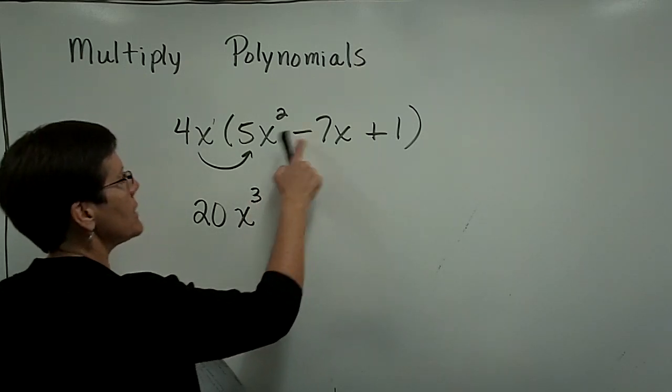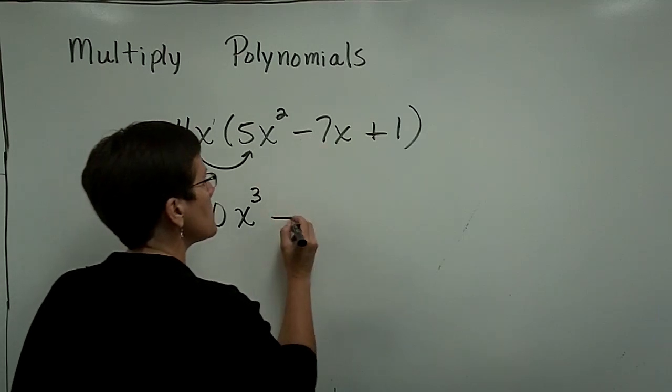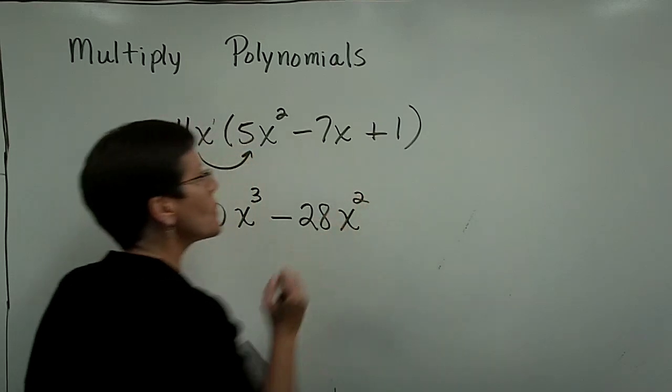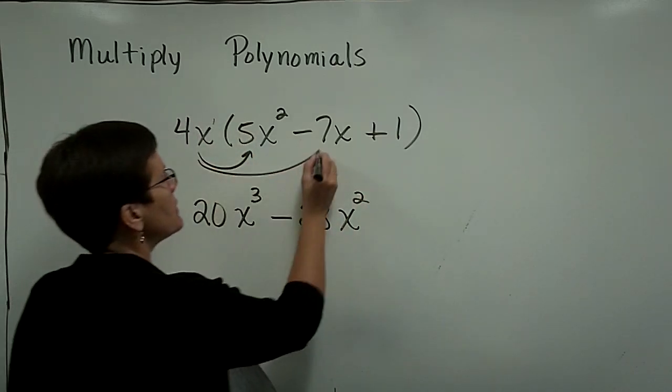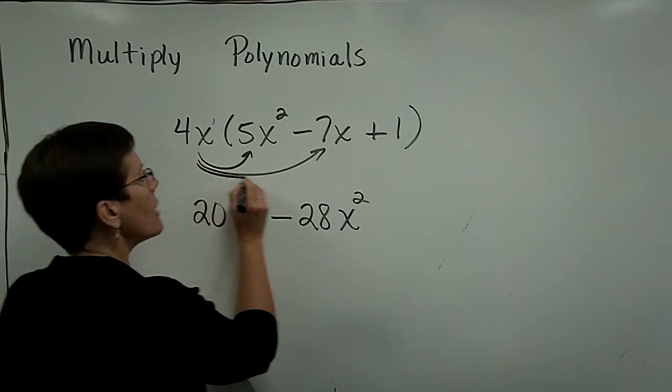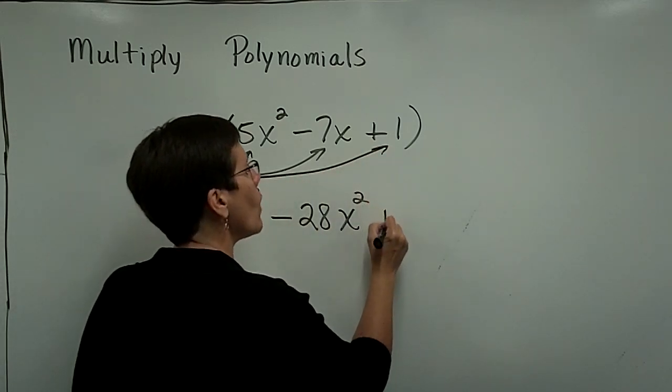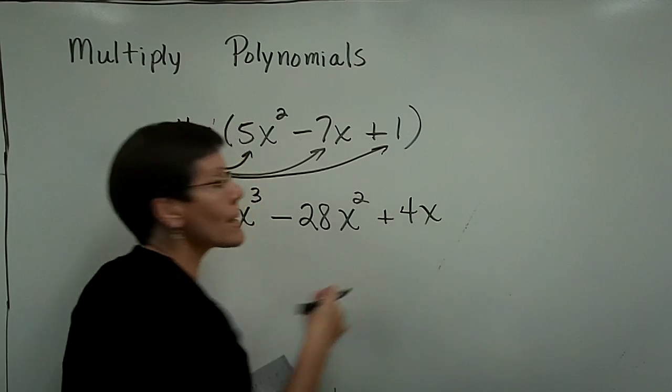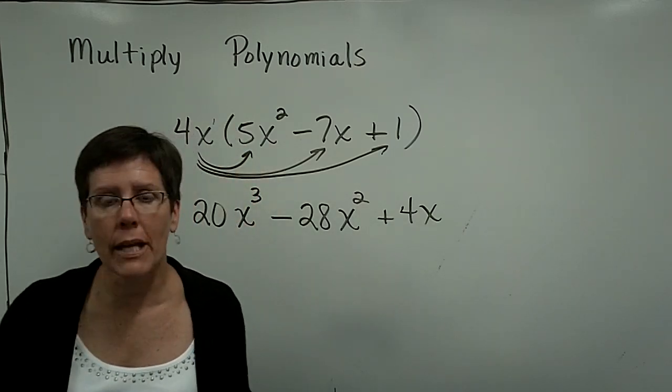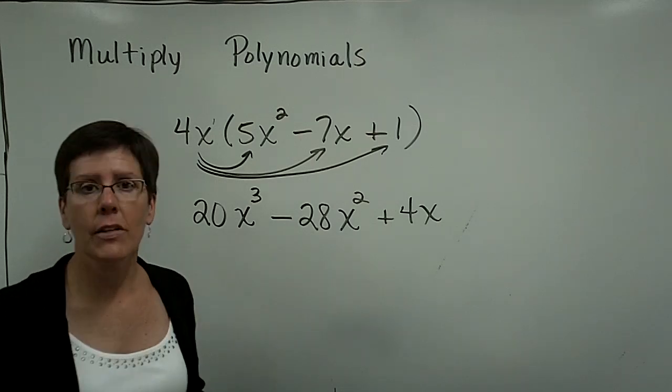I've got a minus sign here. 4 times the minus 7 is a minus 28. x times x is x squared. So I've taken care of that. Distributing the 4x times the minus 7x. And finally, 4x times 1 is just 4x. I'm done. I've multiplied the monomial times the trinomial. There are no like terms. Don't try to collect them. Leave it as is.